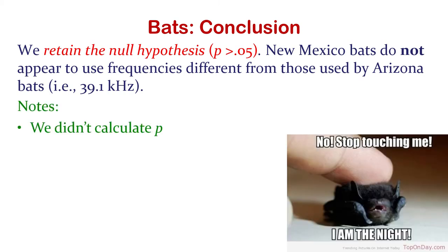We didn't actually calculate a p-value, but we can say p is greater than 0.05. We don't have to calculate the p-value to know that p would be greater than 0.05 if the null hypothesis value is inside a 95% confidence interval.